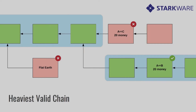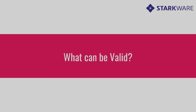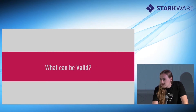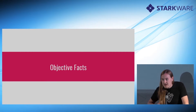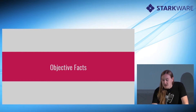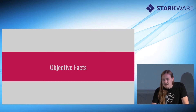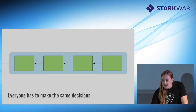You lose the invalid stuff — it's just wrong. And if Alice tries to double-spend funds, we have an objective metric for which history we follow. We talk a lot about what is valid, but we haven't put a lot of work into thinking about what can be valid yet. If you're going to introduce rules into your consensus protocol, we have to figure out whether something can be valid in consensus. The only things that can be valid are objective facts — publicly verifiable information. Everyone has to make the same decisions to reach the same consensus result.